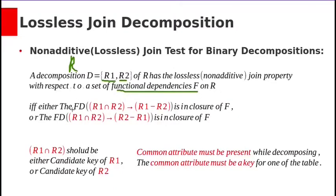If and only if either the functional dependency R1 intersection R2 determines R1 minus R2 is in closure of F, or the FD R1 intersection R2 determines R2 minus R1 is in closure of F.